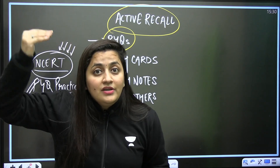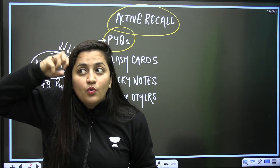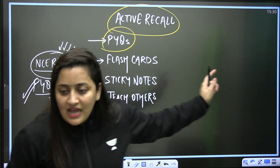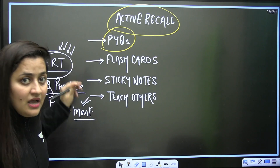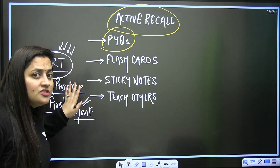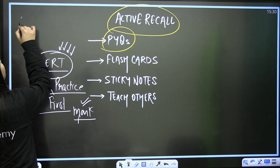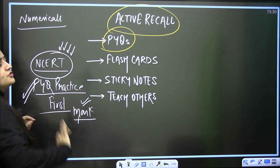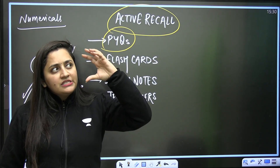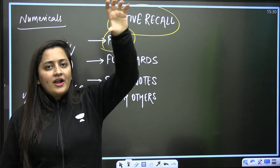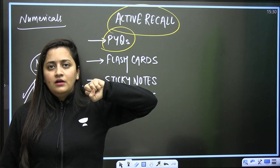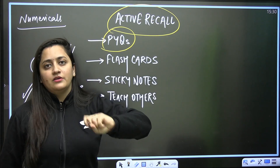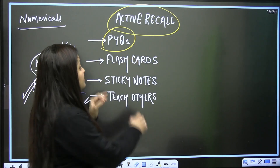That is what active recall is. Reverse your revision approach — and this is not just for biology. For physics and chemistry too, start with numericals from the chapter you have completed. Wherever you make a mistake, pick up that point from the theory, understand the concept, and revise that way. You will retain things in a better way, and trust me, it will boost your score.